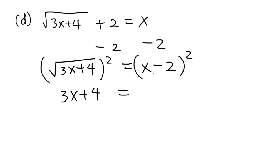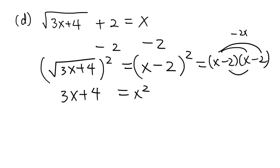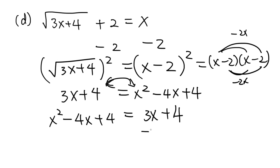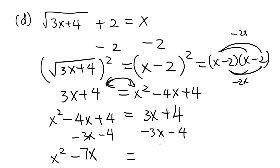Now let's take the square of both sides. The left-hand side is 3x plus 4. On the right-hand side we have x minus 2 squared, which is x minus 2 times x minus 2. That expands to x squared minus 2x minus 2x plus 4, giving x squared minus 4x plus 4. Now we switch the two sides, leaving x squared on the left, and then subtract everything on the right from both sides to get x squared minus 7x plus 0, so x squared minus 7x equals 0.